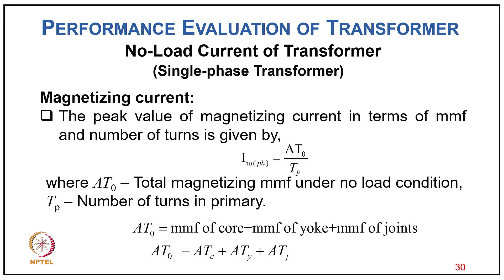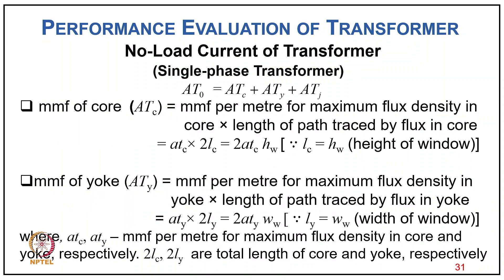If all joints are assumed equivalent to an air gap of length lg, the total ampere-turns for the transformer magnetic circuit is AT = ATiron + 800,000 × lg × Bm. The magnetizing current is Im = (AT_iron + 800,000 × lg × Bm) / (√2 × T1). The total MMF AT₀ = ATc + ATy + ATj (core + yoke + joint contributions).